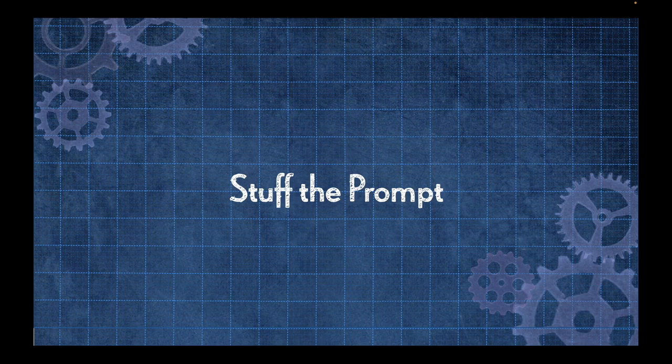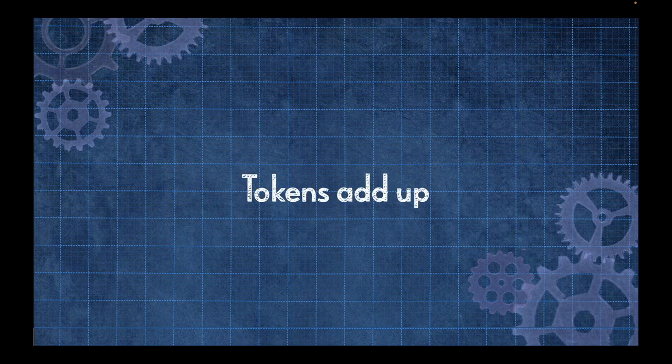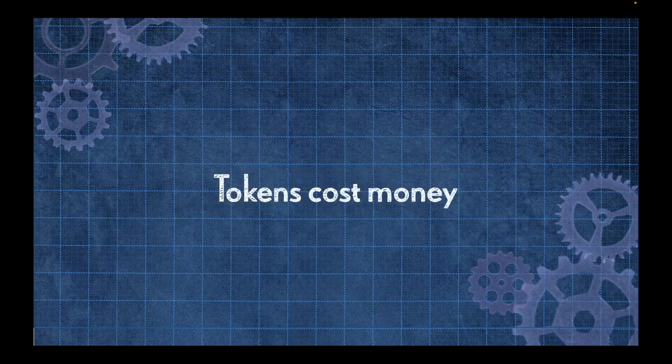The problem with stuffing the prompt, however, is that it results in more tokens in the prompt. These tokens add up. The cost of using an LLM is typically calculated in terms of tokens, and so the more you put in the prompt, the higher the cost is. It costs money. The U.S. Declaration of Independence, for example, weighs in at approximately 1,695 tokens, and that's in addition to any tokens necessary to ask the question.